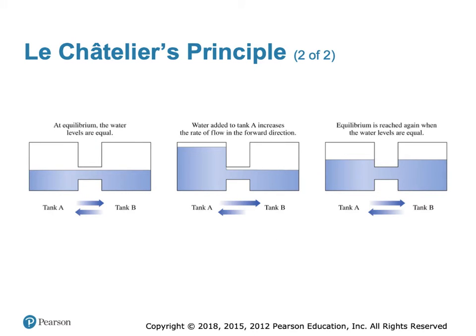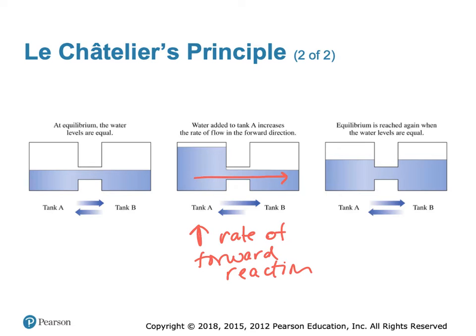In the schematic, you can see we're at equilibrium — the level of water is equal in tank A and tank B, and water can flow between the two tanks. If we increase the amount of water in tank A while flow is still open, you're going to see water flow into tank B. We are going to increase the rate of the forward reaction until we reestablish equilibrium where the water levels are equal.